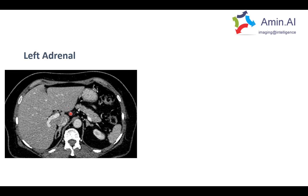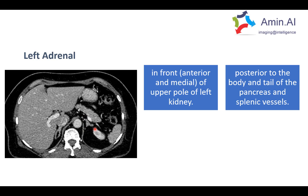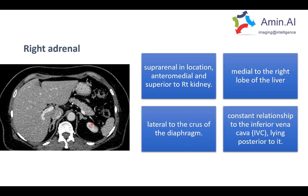Looking at the left adrenal gland, there are important anatomical relationships to recognize. It is in front of the upper pole of the left kidney, so part of the kidney is normally visible alongside the adrenal gland. It is posterior in relationship to the pancreas and the splenic vessels.